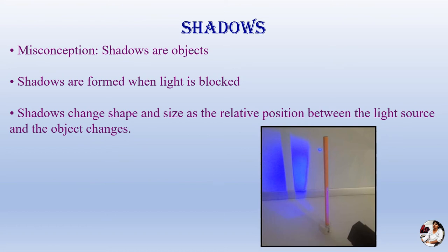Let's take an example. When we are walking on a road on a sunny day, wherever you go something is going with you — don't be afraid, it's just your shadow! Shadows change their shape and size as the relative position between the light source and the object changes. You will observe that in the morning and in the evening the size of the shadow is large compared to noon. Try to observe this if you haven't already.